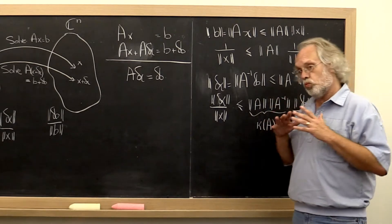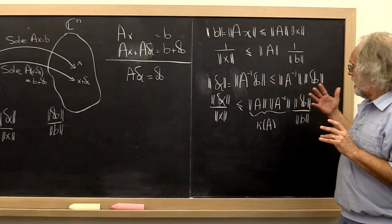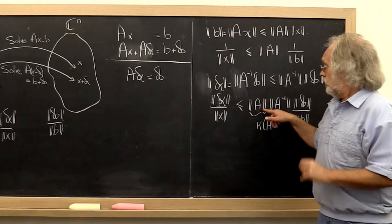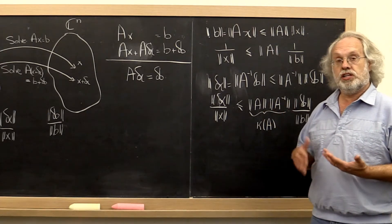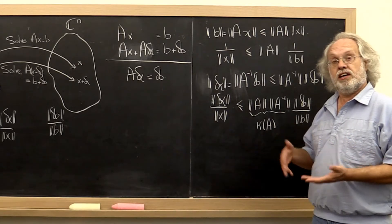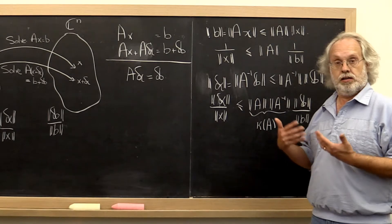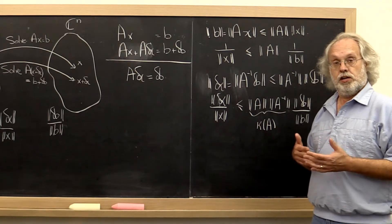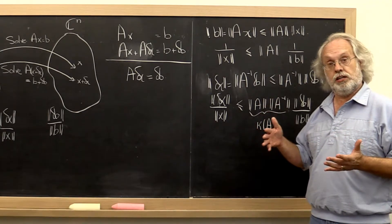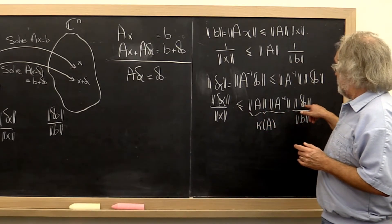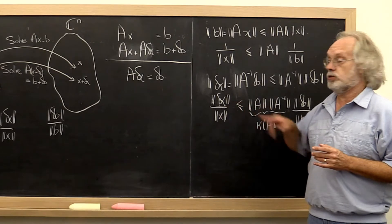So what's another way of looking at this? You start with eight digits of accuracy in your right-hand side. You look at the condition number. You take the log base 10 of the condition number, and that tells you how many digits of accuracy you potentially will lose if you're unlucky, going from the right-hand side to the solution vector.